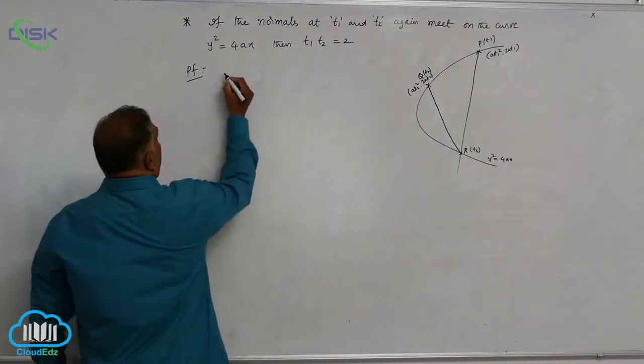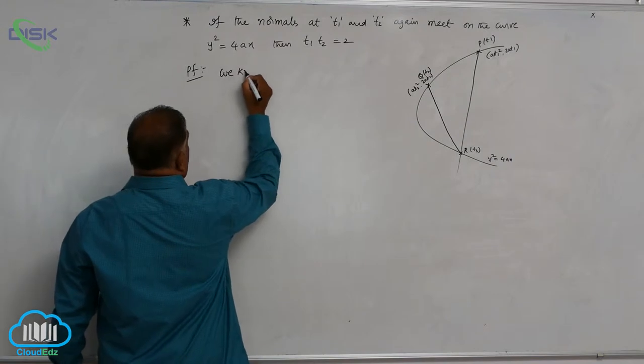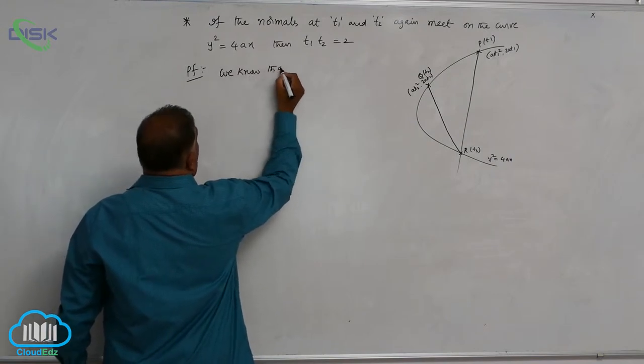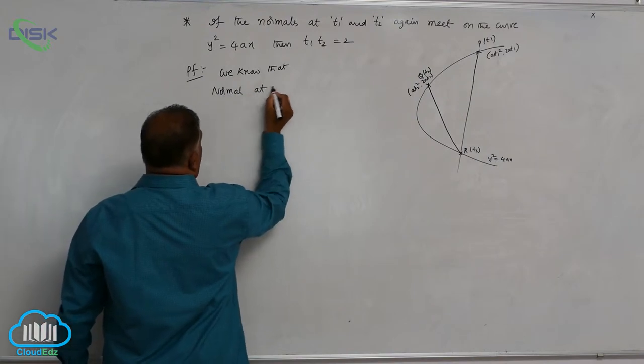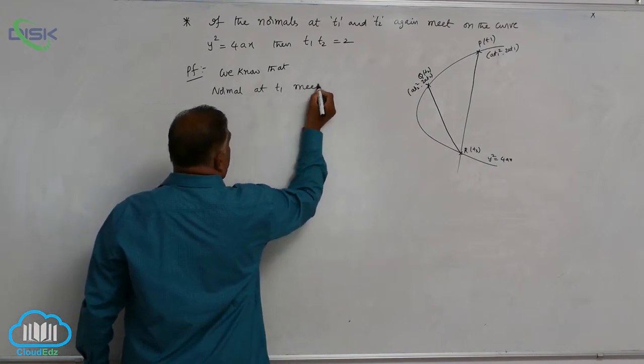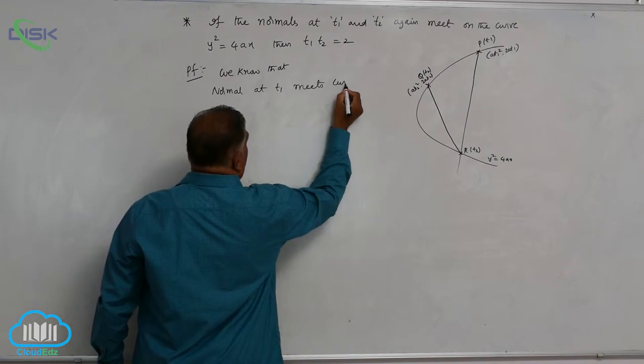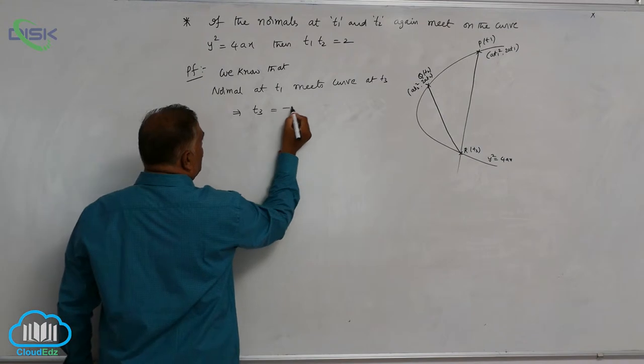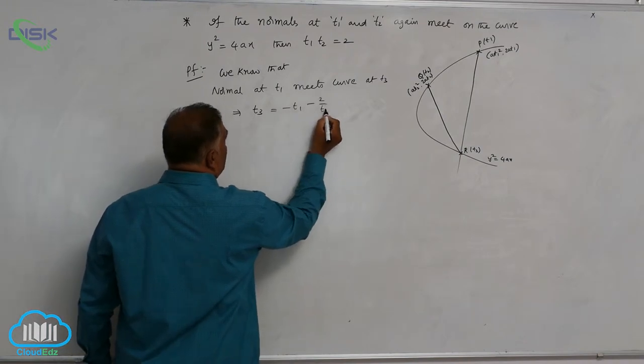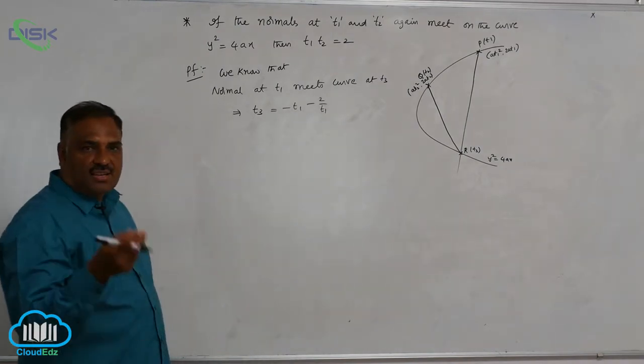Already we know that normal at t1 meets curve at t3 implies t3 = -t1 - 2/t1. We discussed this result earlier.